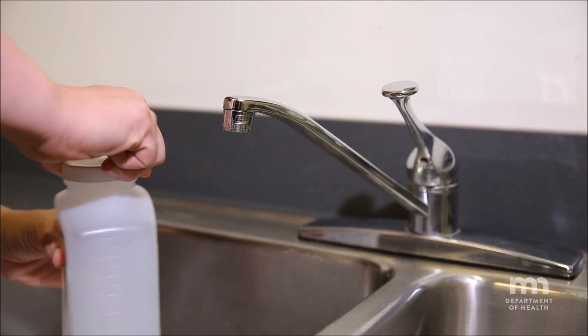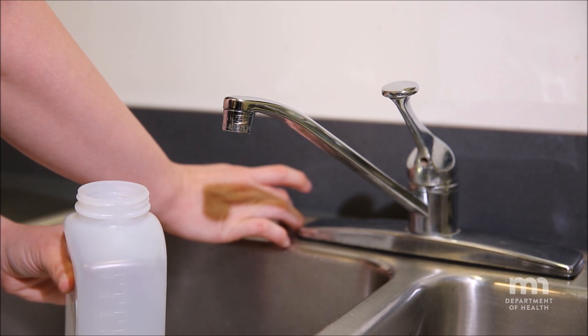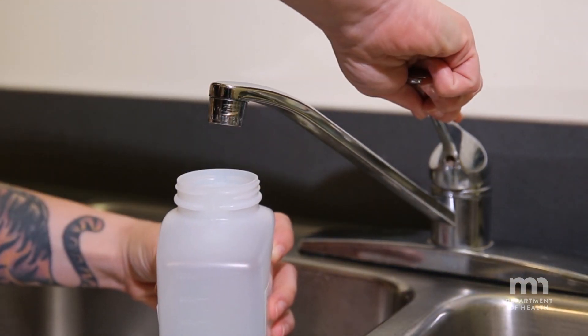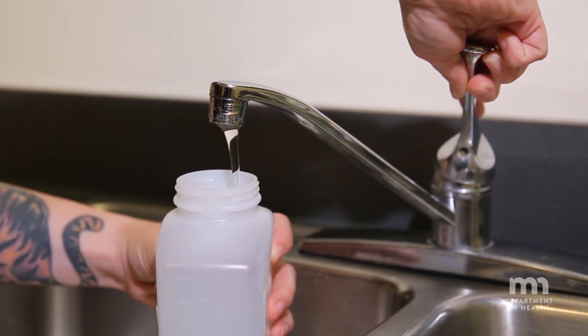When you are ready to take the sample, remove the cap from the bottle and position the bottle under the faucet. Slowly turn on the cold water as if you are filling a glass of water.